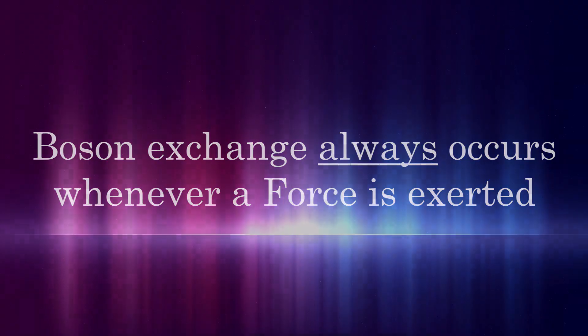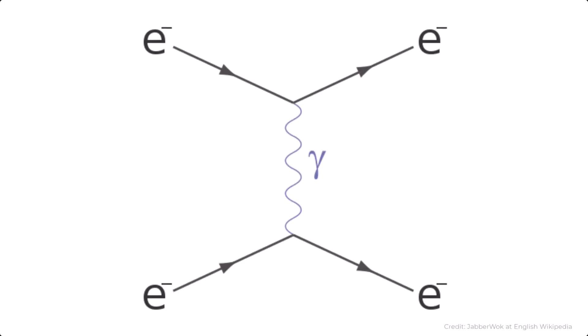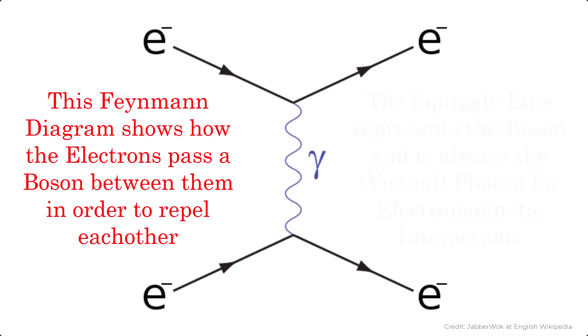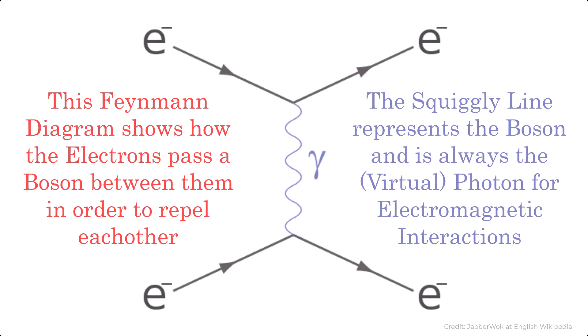A better example would be the electromagnetic repulsion between two electrons. Electrons are fermions, which here will interact via electromagnetism, as they electrically repel each other. To do this, they pass a boson between each other, which exerts a force on each and repulses them. Very simple. The boson in the case of electromagnetism would always be the photon, or virtual photon to be precise.